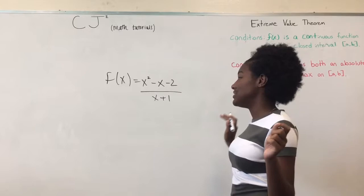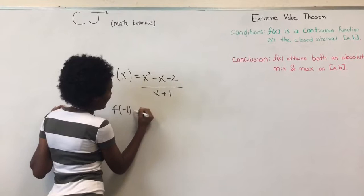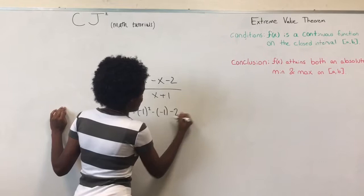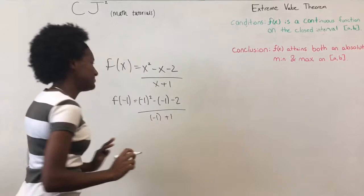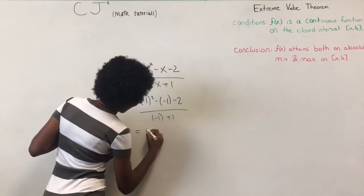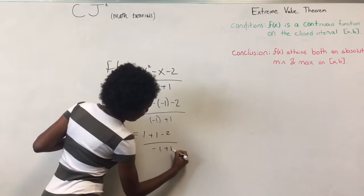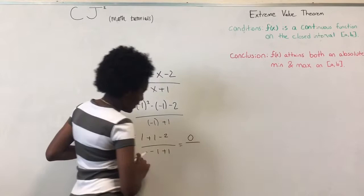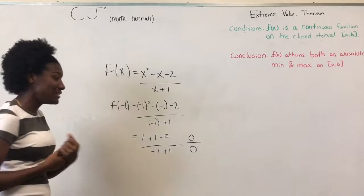And to prove it I'm going to work it out for you. So F of negative 1 equals negative 1 squared minus negative 1 minus 2 all over negative 1 plus 1. 1 plus 1 minus 2 over negative 1 plus 1. So this would be 2 minus 2 which would be 0, and then negative 1 plus 1 would be 0. And as I said earlier, a hole in the rational function is when the numerator and the denominator both are 0 over 0.